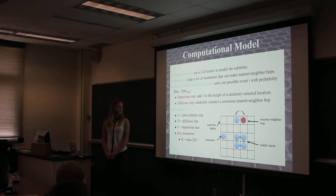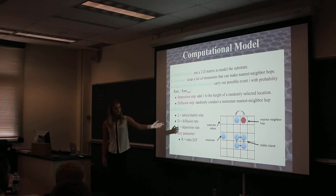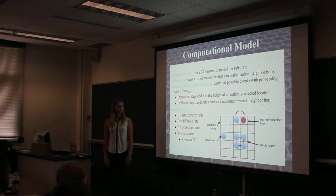The parameters I'm working with are the lattice size, which I implement periodic boundary conditions so the lattice size shouldn't have a huge effect, the diffusion rate, the deposition rate, and then the key parameter is the ratio between these two rates. Here I just have a picture I made showing the two-dimensional matrix and some of the things that you might have in it.